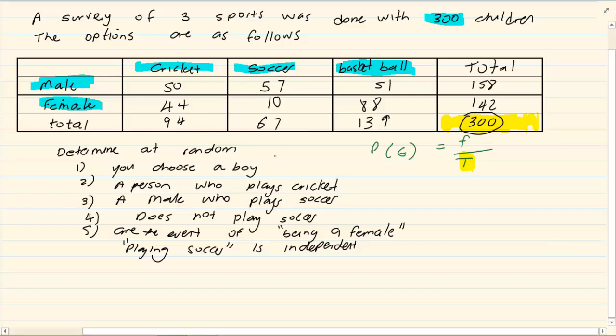Now when they say you choose a boy or a male, where is the total for the males? If I look, this is the males that play cricket. This is the males that play soccer. This is the males that play basketball. But the total is 158.